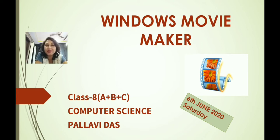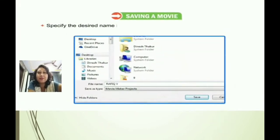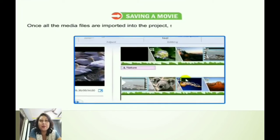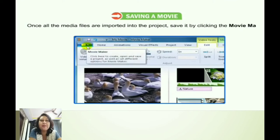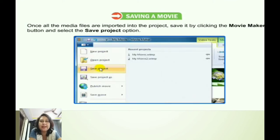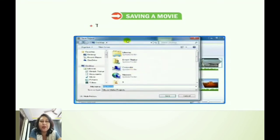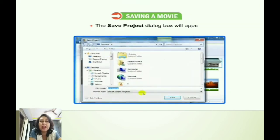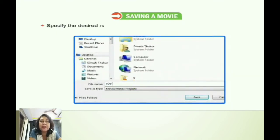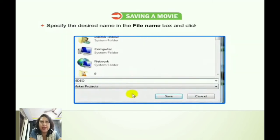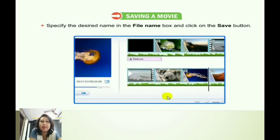Before starting today's class, let's have a small recap of what we have done in our last class. In our last class, we had done about how to save a movie in Windows Movie Maker. So let us recapitulate the topic once again. Once all the media files are imported into the project, we save it by clicking on the Movie Maker button and then select the Save Project option. The Save Project dialog box will appear and we have to specify the desired name in the file name box and click on the Save button.